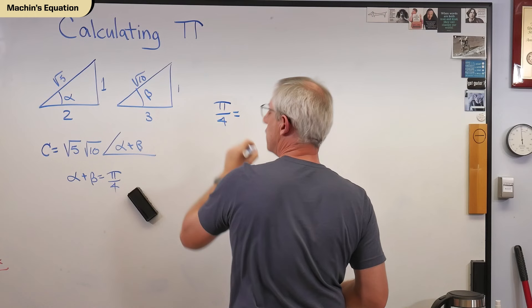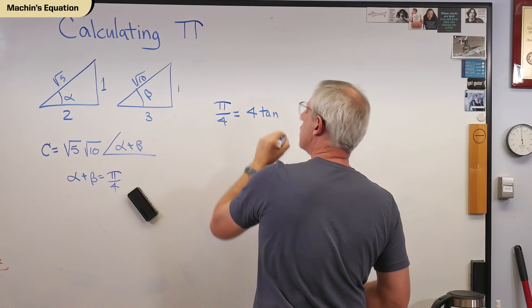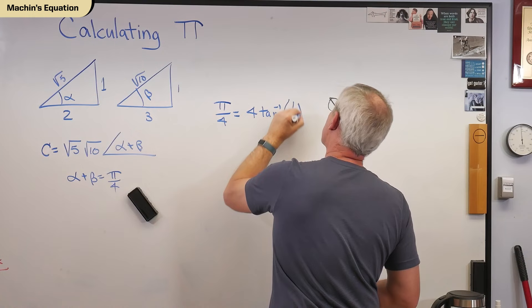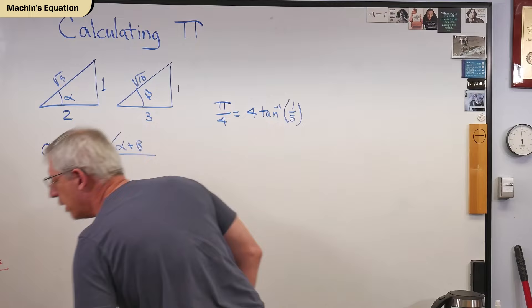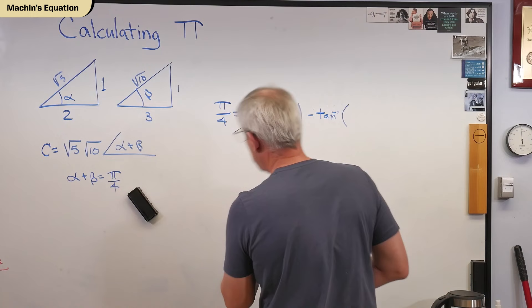Remember, convergence is determined by the largest argument. So far, the largest argument we've seen is a half. Yeah, that's looking pretty good, huh? That's better than a half by a lot. I'm going to make sure I get this right here. These are really weird numbers. And it's 1 over 239.